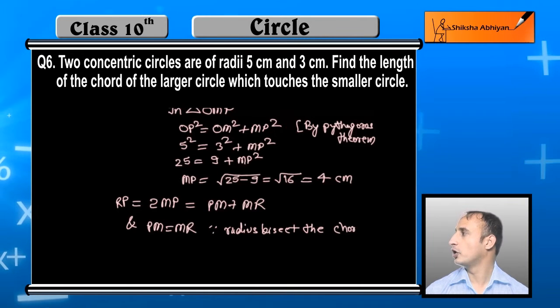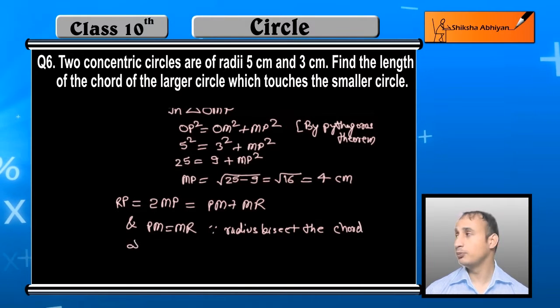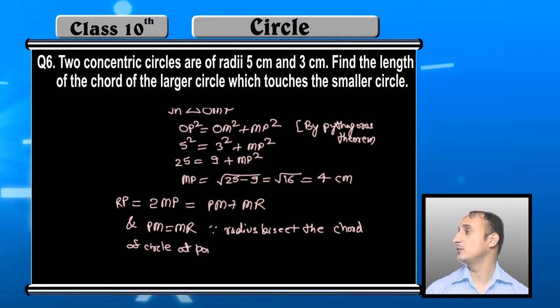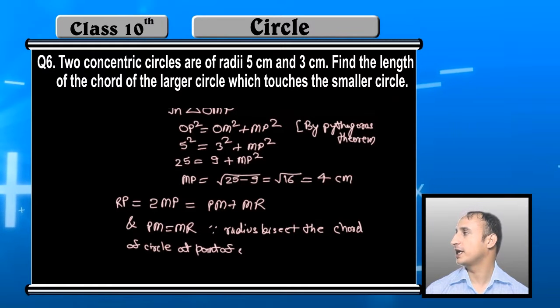Radius bisects the chord. Now PM is already known. Therefore, RP will be double that, which is 8 cm, at the point of contact on the circle.